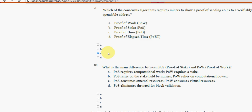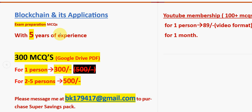For the tenth and final question, option B is the probable solution. These are the probable solutions for the week 5 assignment of the course Blockchain and Its Applications. Hope this video was helpful — if so, definitely hit the subscribe button, like the video, and share it with your friends and classmates.